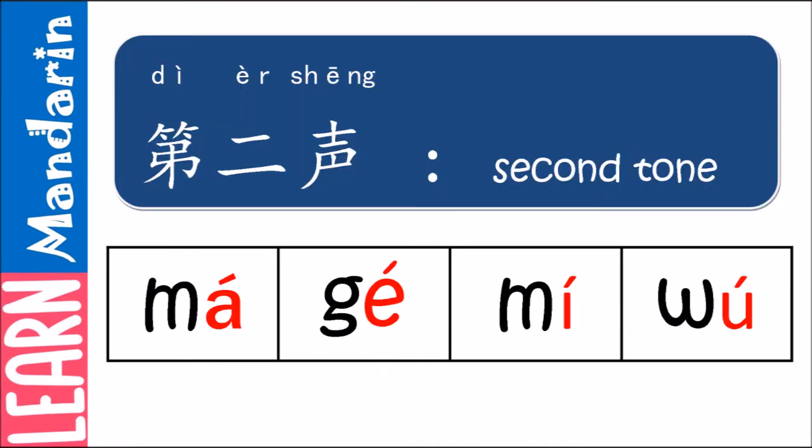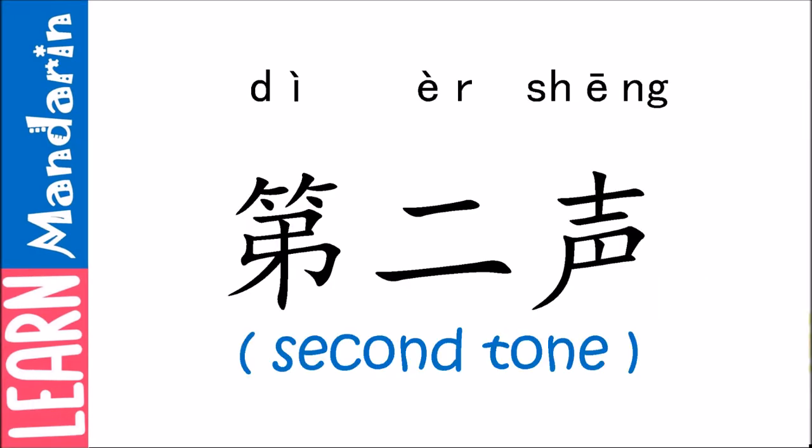The second tone looks like a rising diagonal line above a letter. The second tone is rising pitch, just like when you are in doubt. Let's try it out.